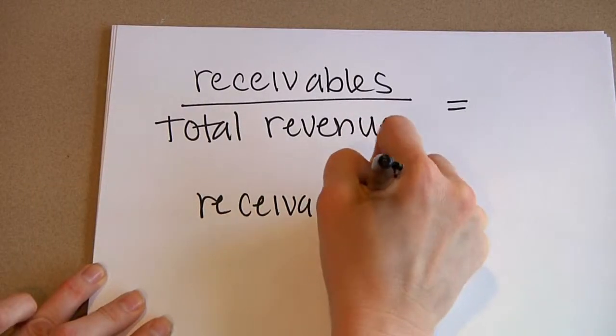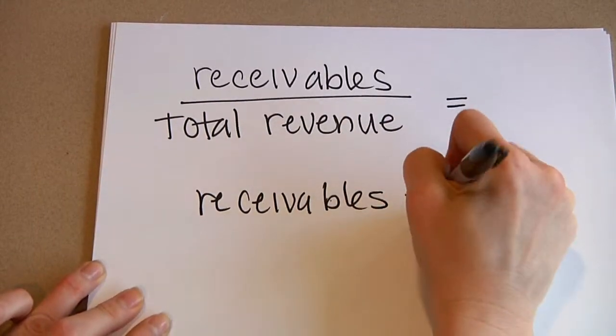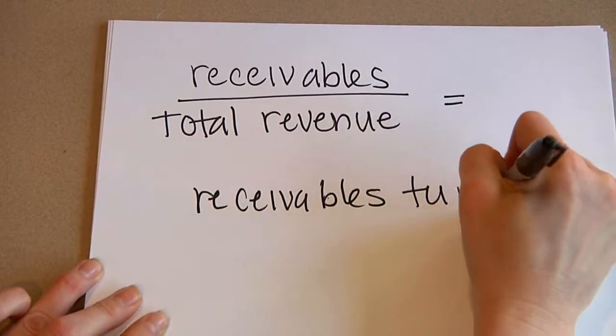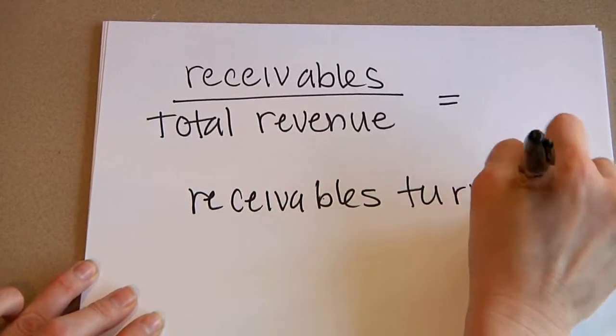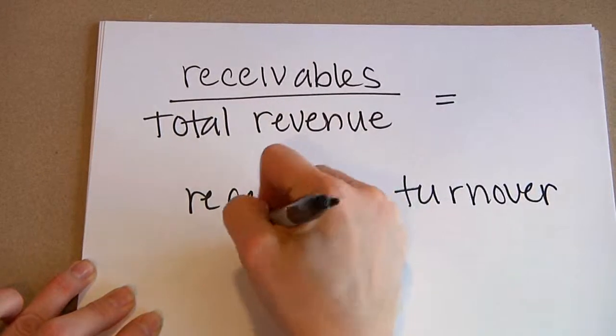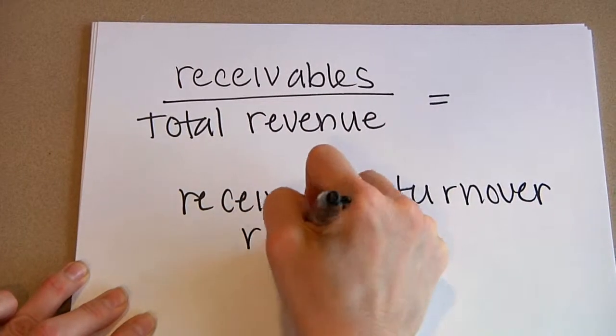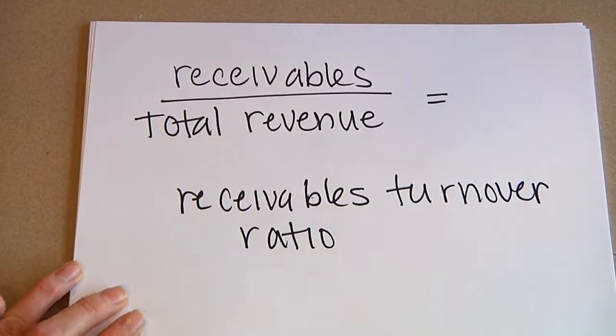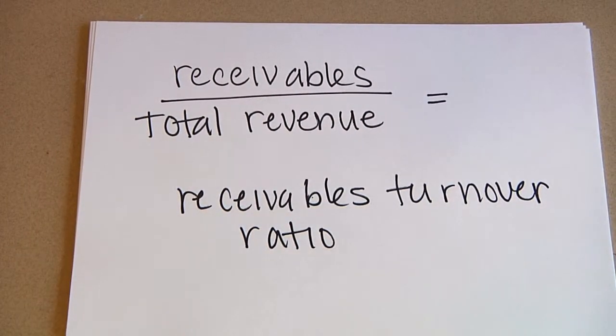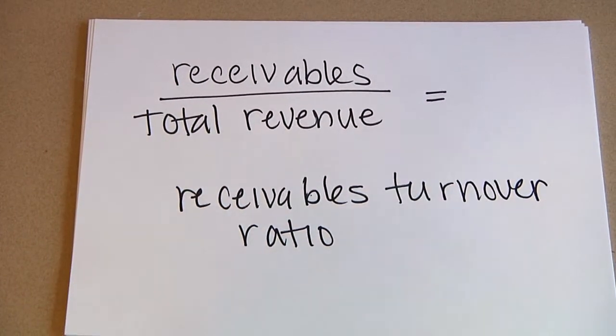Sales or receivables turnover is how quickly people pay you. It is the net revenues divided by your accounts receivable.